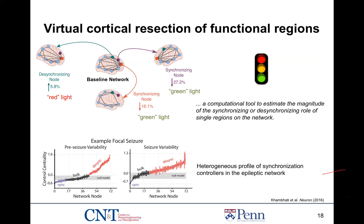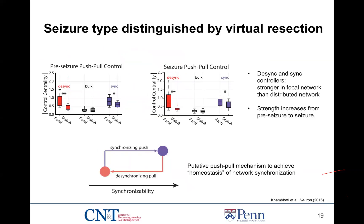What does this mean for the ability of a network to facilitate seizure spread? The seizure type can actually be distinguished by this virtual cortical resection technique. Looking at the distribution across observed seizures during the pre-seizure state and during the seizure state — comparing focal onset to distributed seizures for each control type — we found that focal networks during the pre-seizure state exhibit both stronger desynchronizing regions and stronger synchronizing regions of the network than distributed onset seizures.